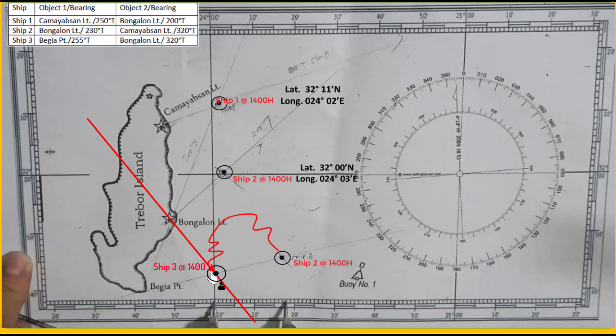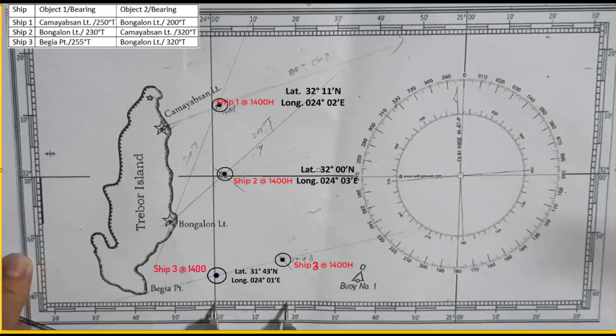So the final corrected coordinates of Ship 3 are: latitude 31° 43' north, longitude 024° 01' east.